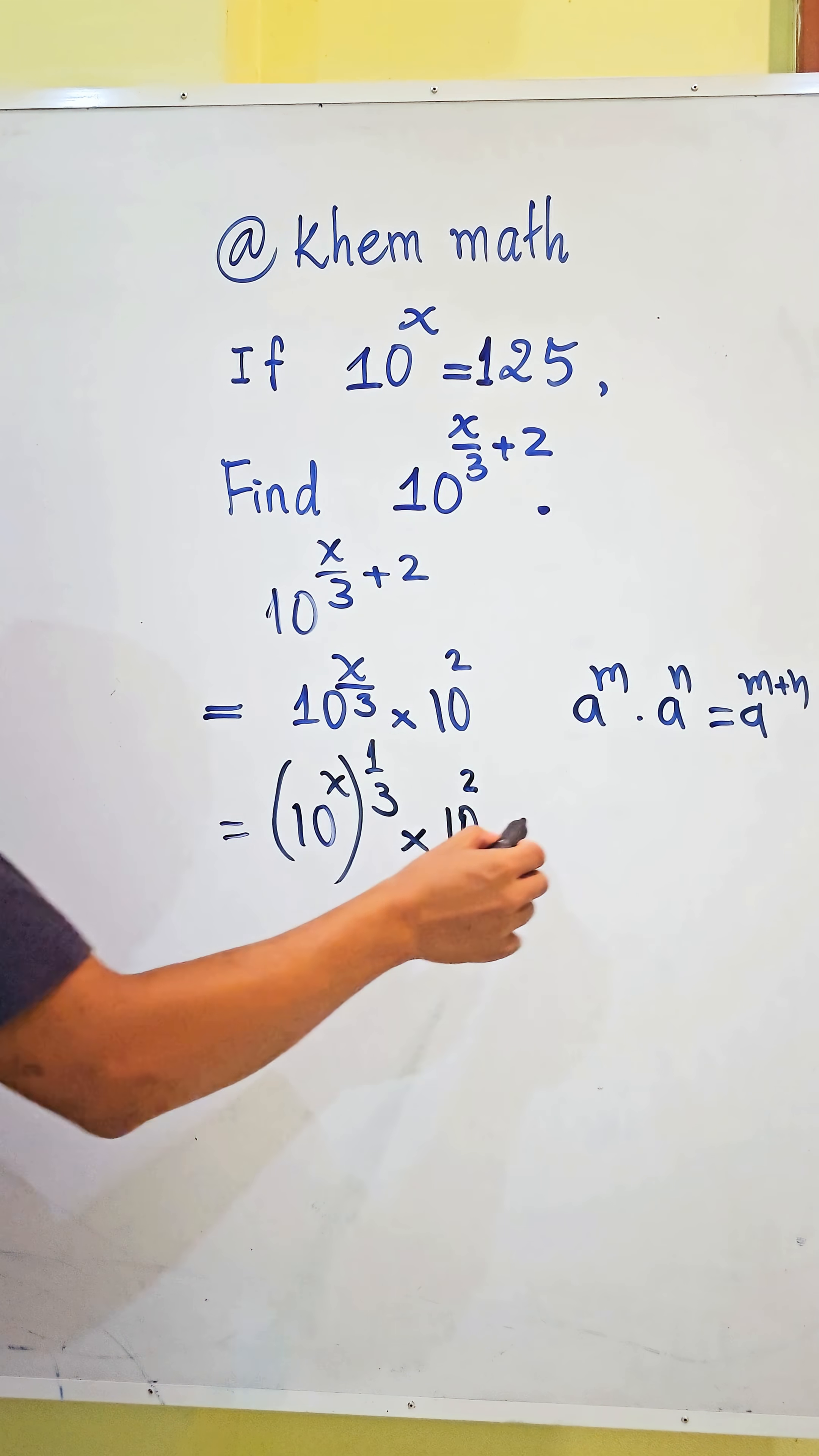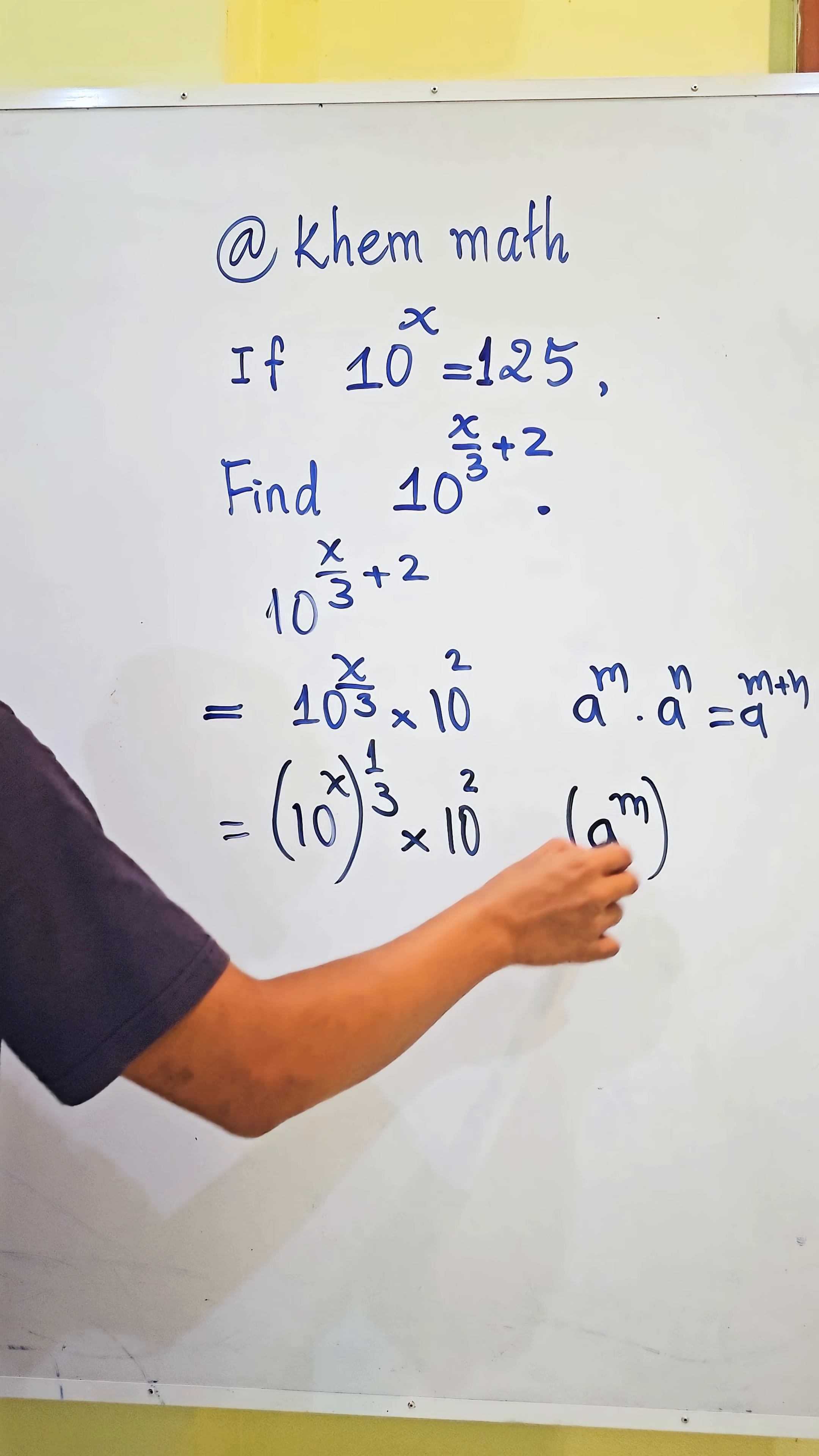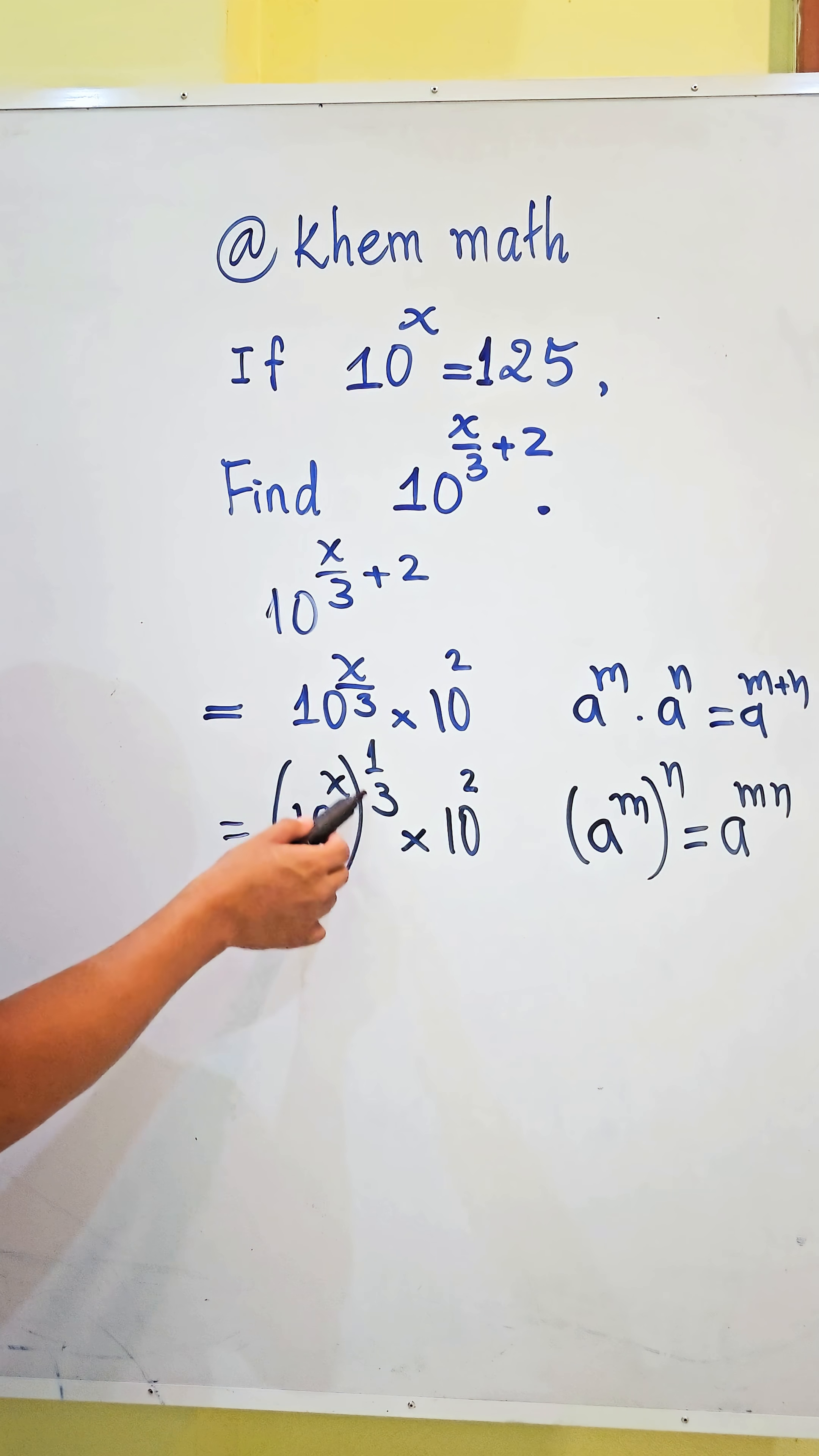Here we use the formula: a power m all power n equals a power m times n. So it is h times 1 divided by 3, we get h divided by 3. And here, 10 power h...